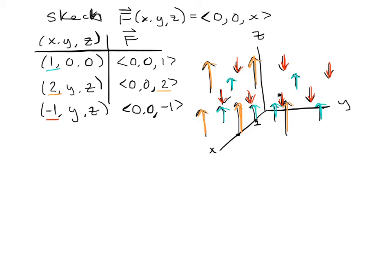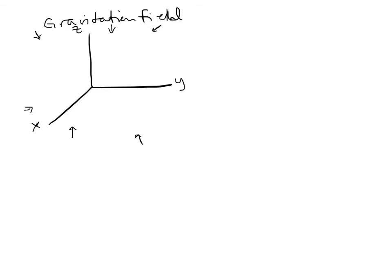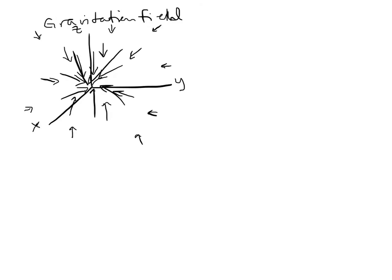Now we have some special vector fields. A gravitational field would be three-dimensional, where gravity is stronger as you go toward the center. Along the outside the vectors are weak and small, but as we get more toward the center, these vectors start getting bigger. The vectors keep getting bigger as you go toward the inside, though at some point it becomes too messy to draw.